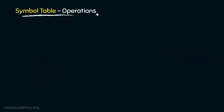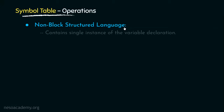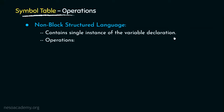The operations to be performed on the symbol table depend on the type of language. In the early days of programming we had non-block structured languages, where programs didn't use any blocks. These contained only a single instance of each variable declaration, which had its scope throughout the entire program. Therefore, on the symbol table we could either insert identifiers using the insert operation, or access them with the lookup operation. One popular example of a non-block structured language is Fortran.